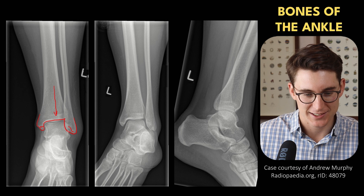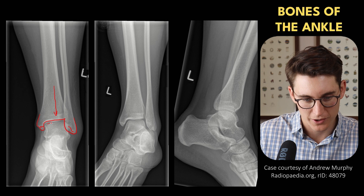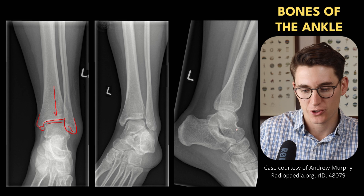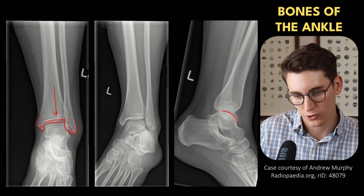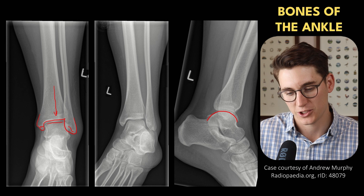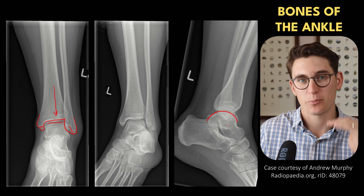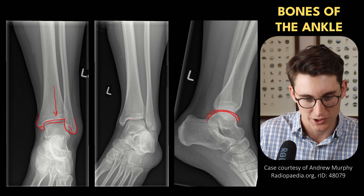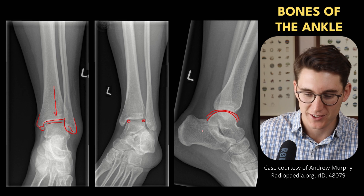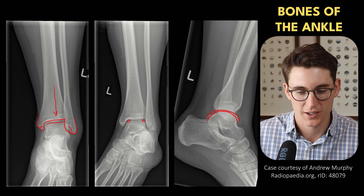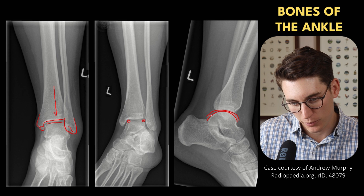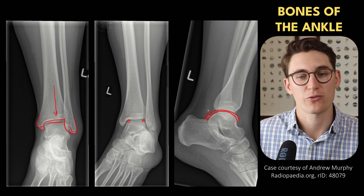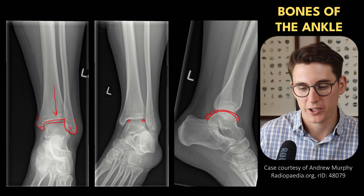If we have a look at the talus itself, we can see the superior surface of the talus — what's known as the talus dome. We can see this dome shape on our lateral view of the talus. We haven't actually caught this talus in pure lateral view because we can see both the medial and the lateral domes here. The talus has a posterior process, and sometimes that posterior process is separate from the talus — that's what's known as an os trigonum.